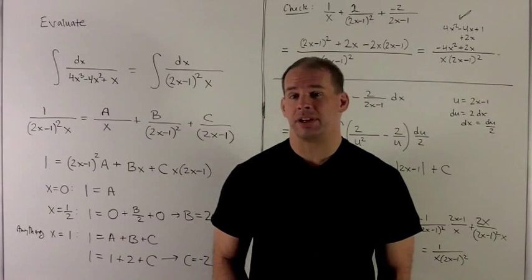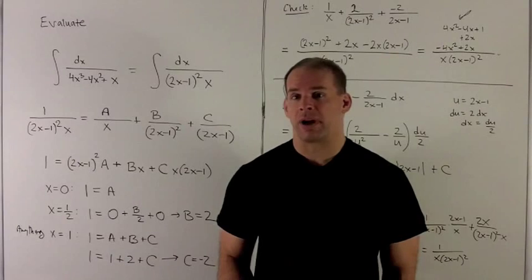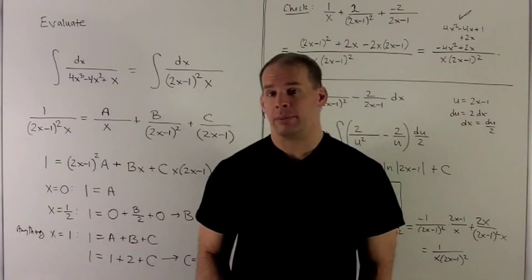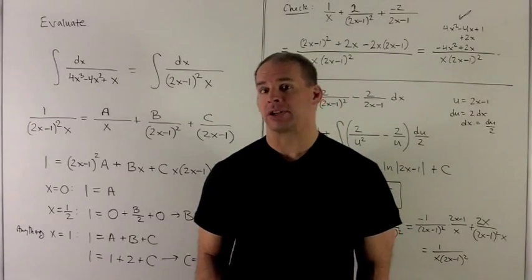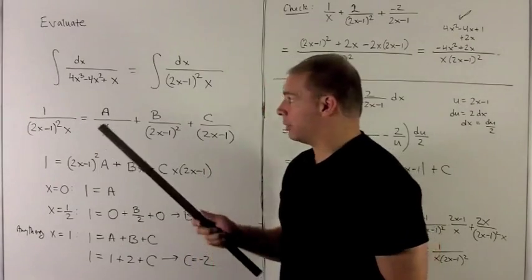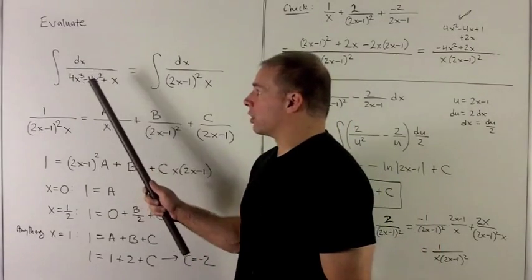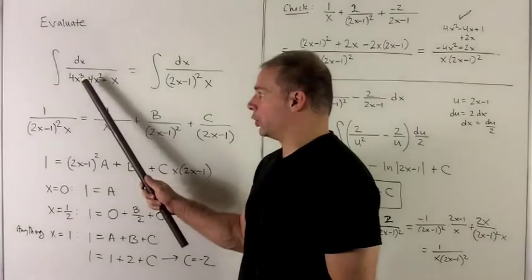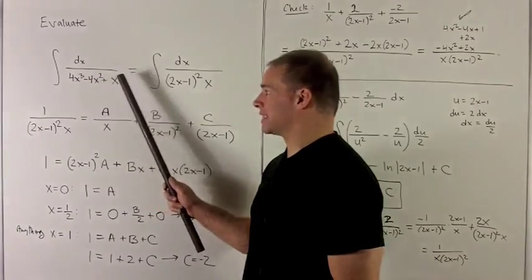Let's find the following indefinite integral using partial fractions where we have multiples of linear factors. I'm looking at indefinite integral of dx over 4x cubed minus 4x squared plus x.